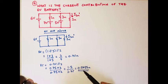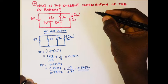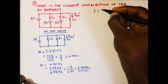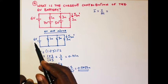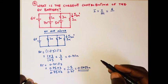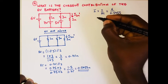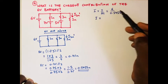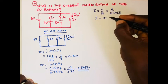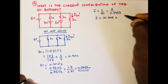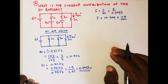Now we find the current produced by the six volts. According to Ohm's law, V equals IR, so I equals V divided by R. In this case we have the total resistance Rₜ. Our voltage is six volts, so I equals six divided by 0.5455 ohms. Six divided by 0.5455 equals 10.999, which is approximately 11 amperes. So the total current produced by the six volts is 11 amperes.